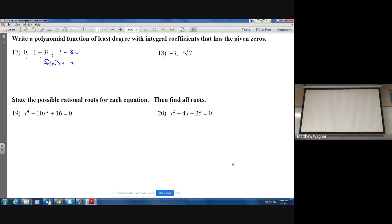So what I'm going to do is write out my factors. We have x, we have x minus 1 plus 3i, and we have x minus 1 minus 3i. At this stage, we just want to distribute everything.